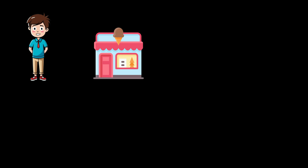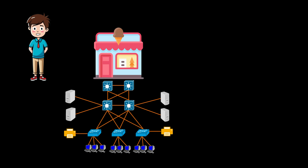Let's go back to our ice cream company owner James. James set up his own ice cream company with a local area network containing core switches, distribution switches, and access switches, connected to an internet connection for outside traffic. He has a single internet connection shared between all PCs, a shared printer that all PCs can use, and a file server where all users can access shared files using the local area network.